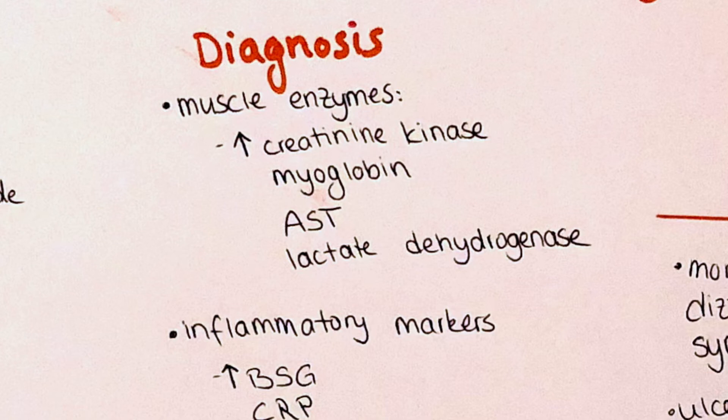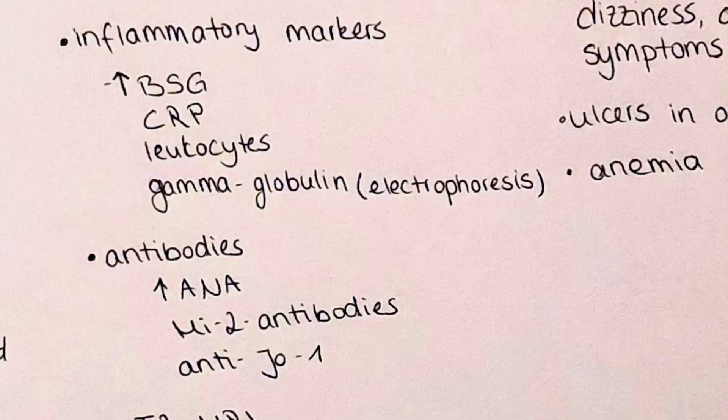The antibody formation creates the basis for diagnosis, as laboratory parameters will change and can be observed in blood samples. Due to muscle damage, creatine kinase, myoglobulin, AST, and lactate dehydrogenase will all be elevated in the blood. Inflammatory markers such as BSG, CRP, leukocytes, and gamma globulin will also be increased. Note that gamma globulins are not observed in a normal blood sample but rather under gel electrophoresis.